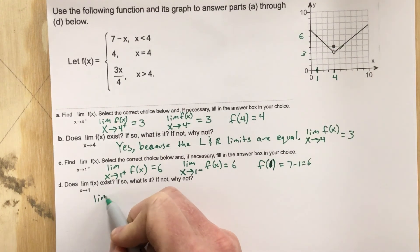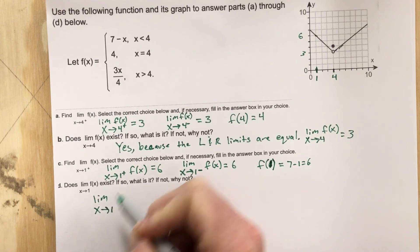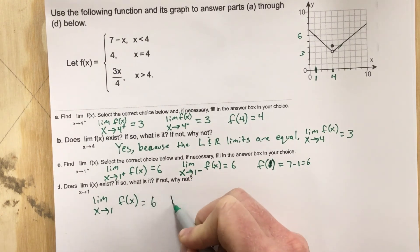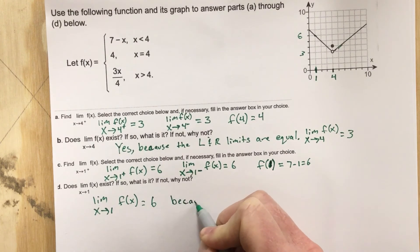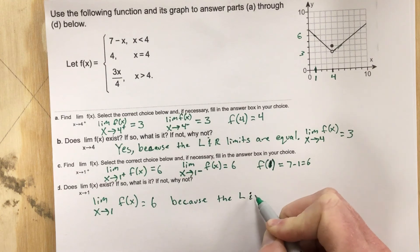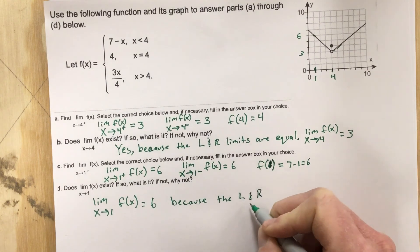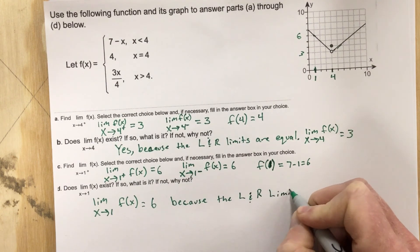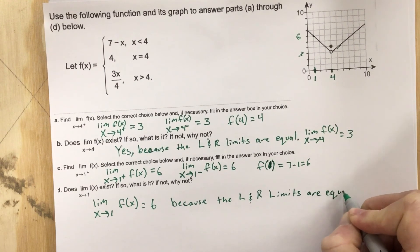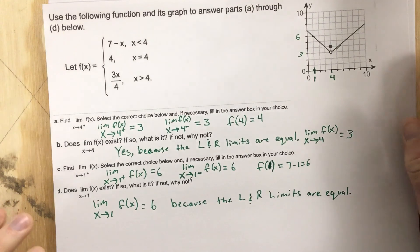So limit as x approaches 1 of f(x) equals 6, because the left and right limits are equal.